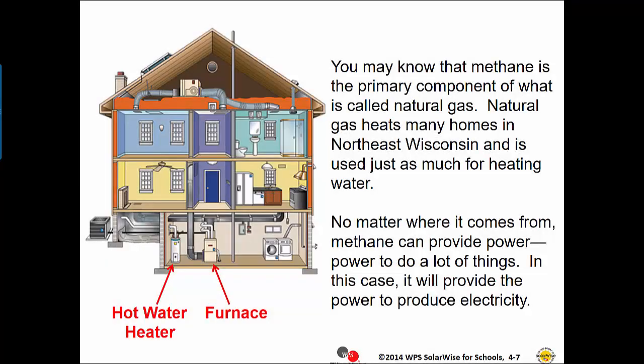Methane is the primary component of what is called natural gas. Natural gas heats many homes in northeast Wisconsin and is used just as much for heating water. Methane can provide power — power to do a lot of things. In this case, it will provide the power to produce electricity.